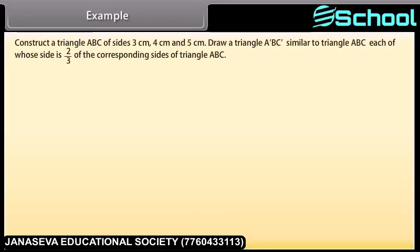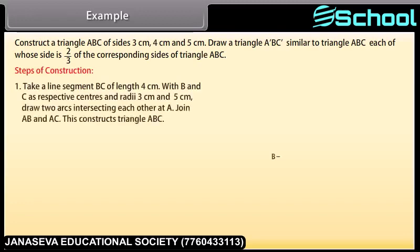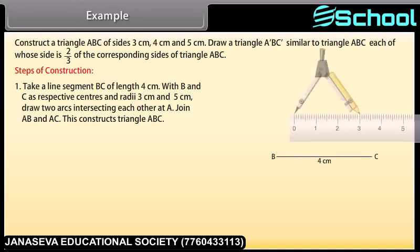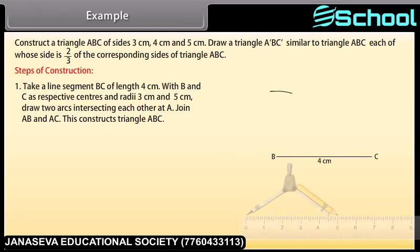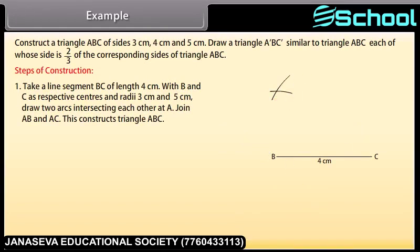Example 1: Construct a triangle ABC of sides 3 cm, 4 cm and 5 cm. Draw a triangle A'BC' similar to triangle ABC, each of whose sides is 2/3 of the corresponding sides of triangle ABC. Steps of construction: Take a line segment BC of length 4 cm. With B and C as respective centers and radii 3 cm and 5 cm, draw two arcs intersecting each other at A. Join AB and AC. This constructs triangle ABC.